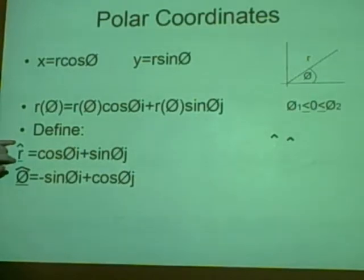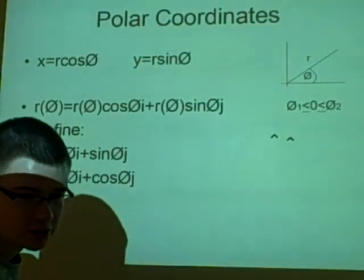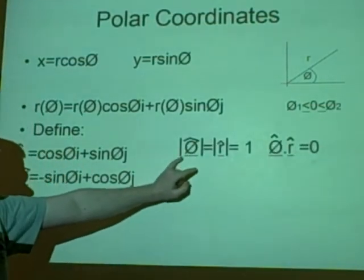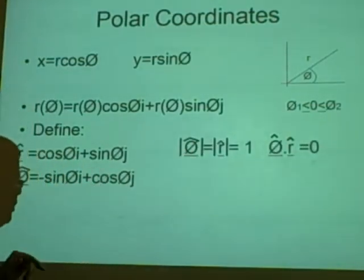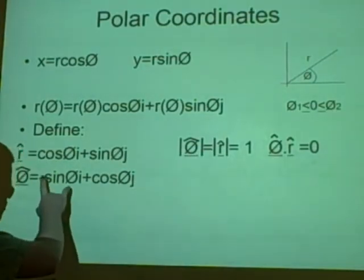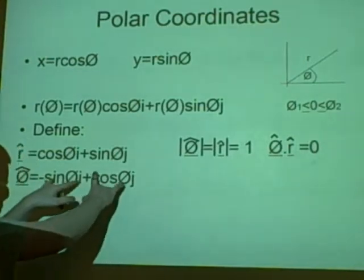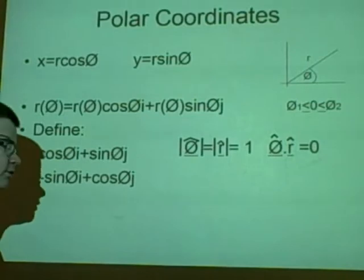And theta hat which is the unit vector perpendicular to r. Some things we can safely say already are that the modulus of theta hat and the modulus of r hat both equal 1. That is because sine squared plus cosine squared is 1, so we are squaring them and then square root again to make sure there are no negatives.